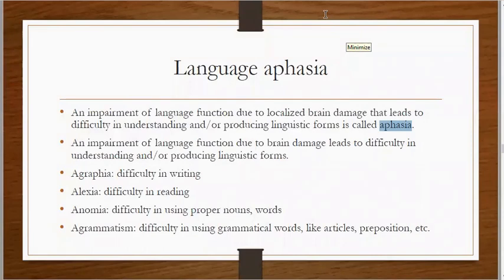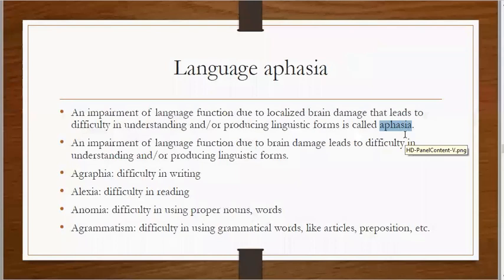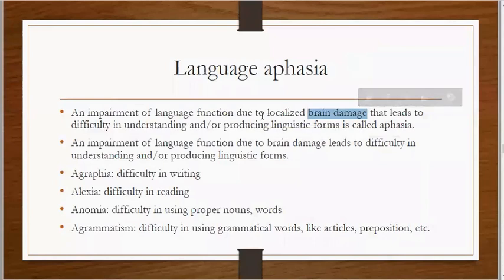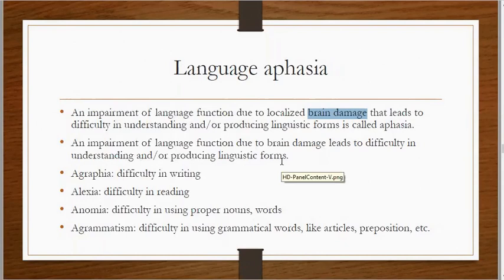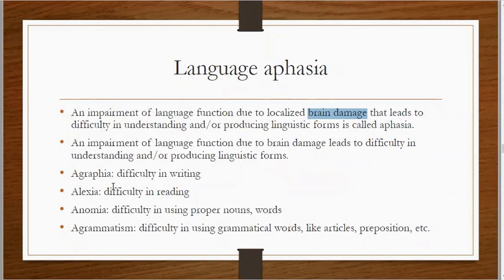There are different types of aphasia because different parts of the brain control different language functions, so damage to different parts causes different types of aphasia. Aphasia is a language impairment or language disorder caused by damage to the brain, leading to difficulty in understanding or producing language.